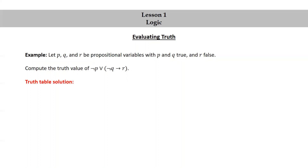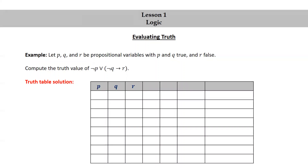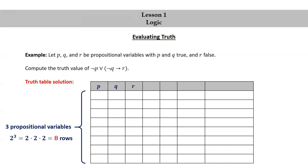Let's start with a truth table solution. In this solution we're going to generate the whole truth table for this compound statement. Since there are three propositional variables p, q, and r, we will need three columns — one for p, one for q, and one for r. There will be 2 to the 3, which equals 2 times 2 times 2, or 8 rows.